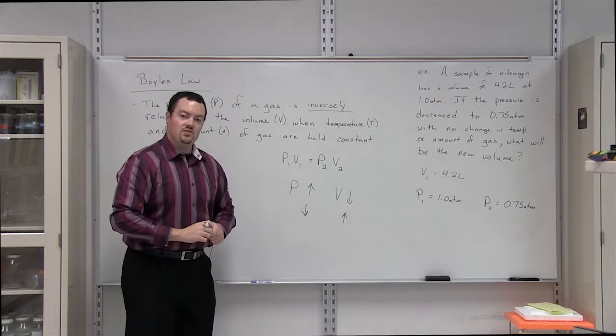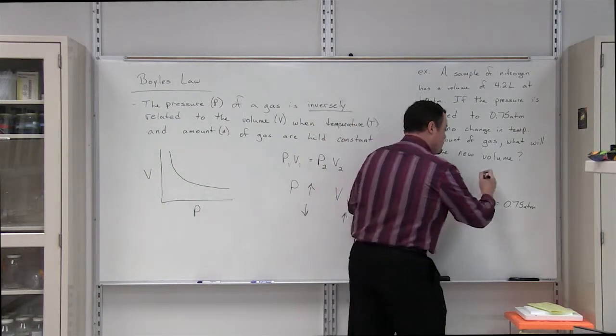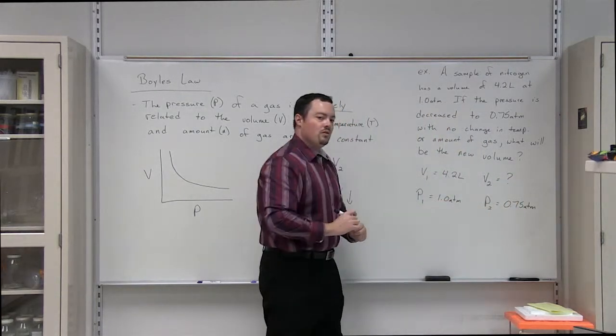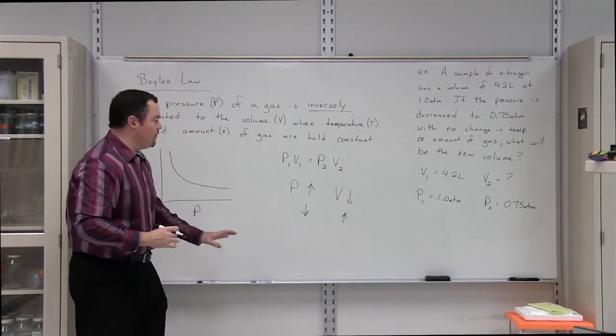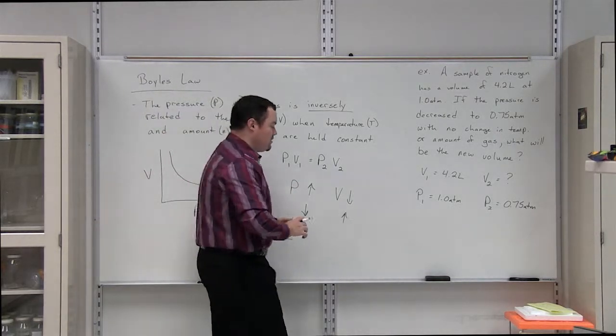And it's asking us to solve for the volume when we decrease the pressure. So, we are going to solve for V2. In order to solve for V2, we just input the values given to us in the problem into our formula.